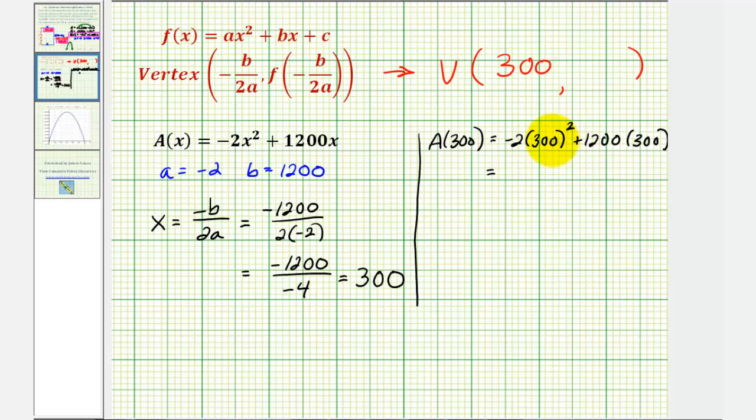So this would be 300 squared, which is 90,000 times negative 2, negative 180,000 plus 1,200 times 300 would be 360,000, which is equal to 180,000.